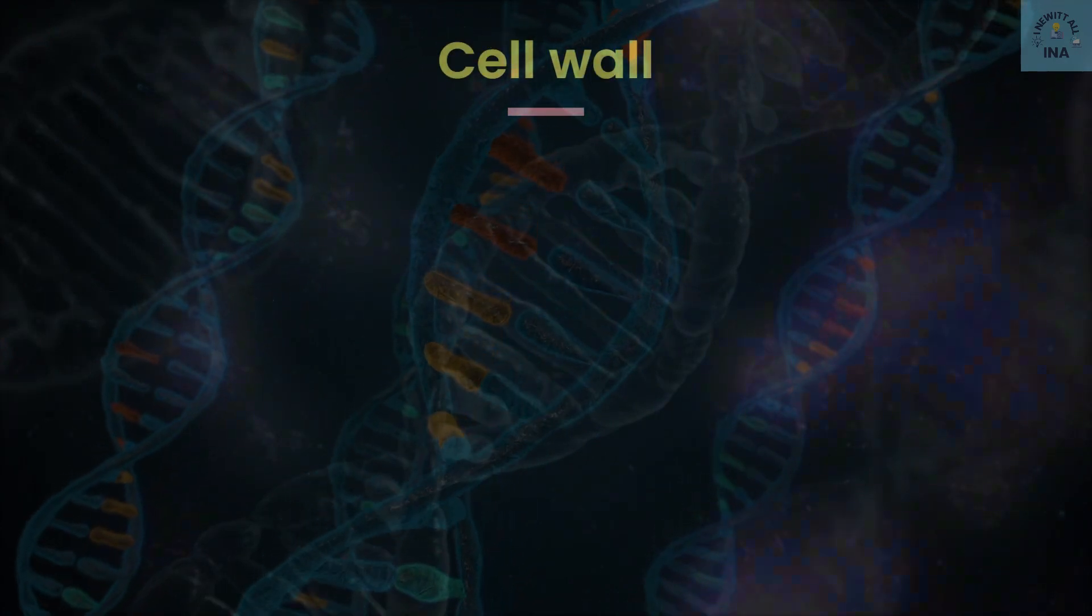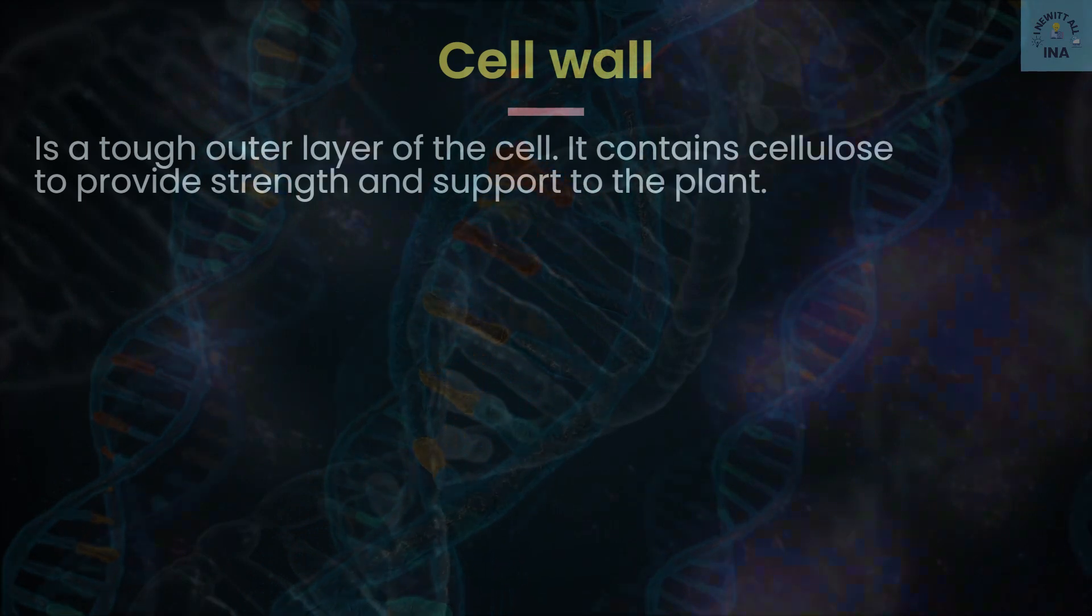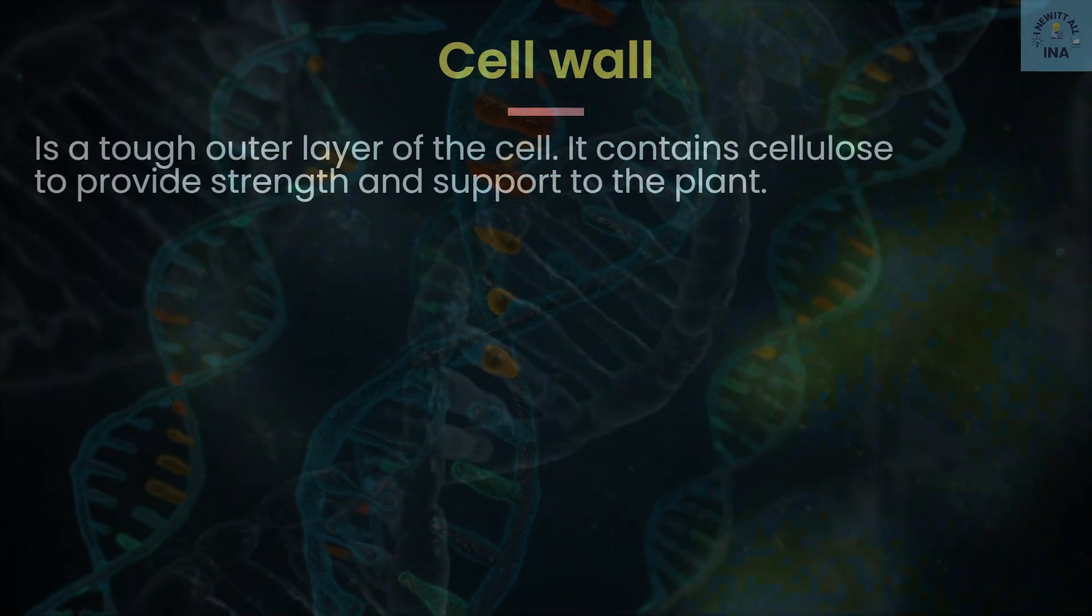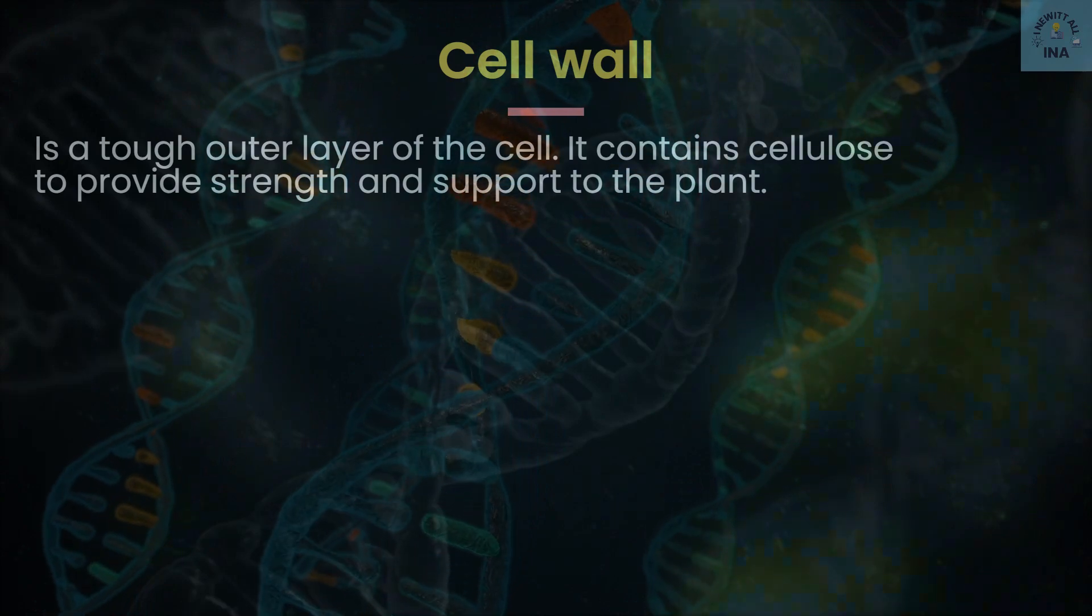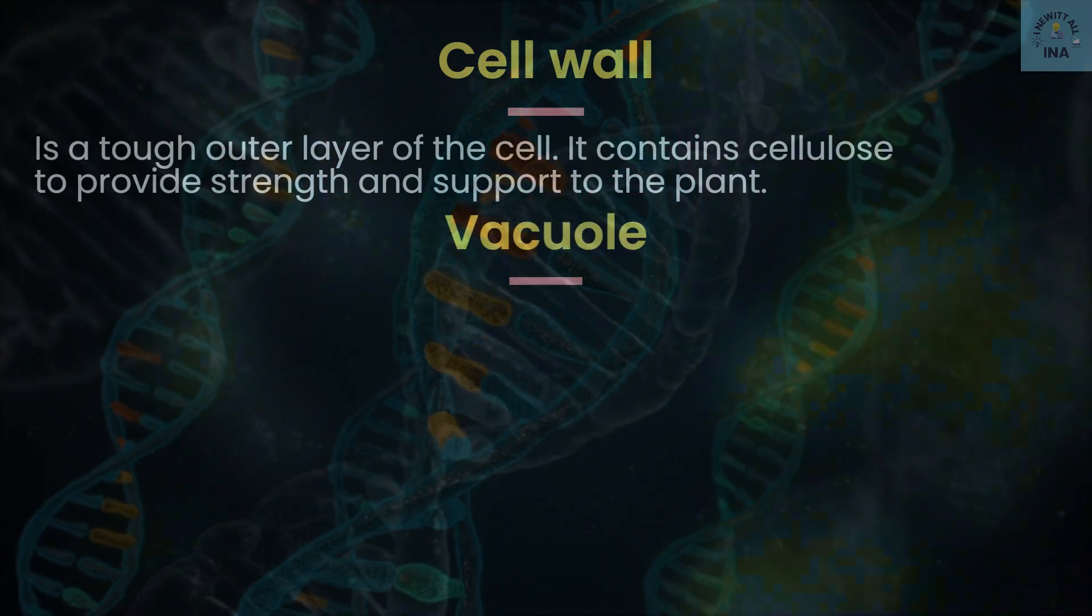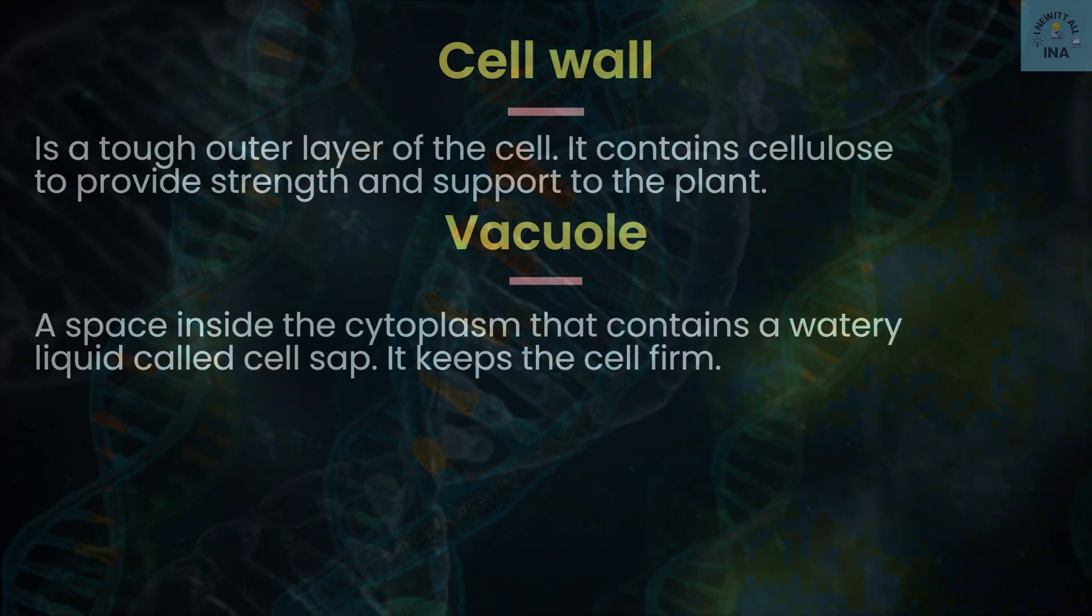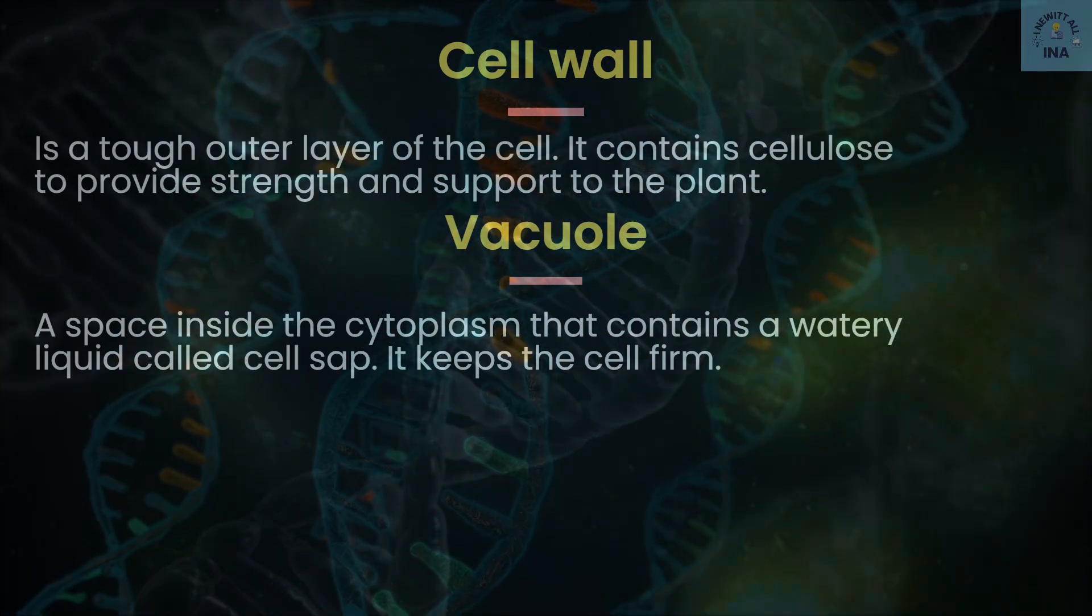Cell wall: a tough outer layer of the cell. It contains cellulose to provide strength and support to the plant. Vacuole: a space inside the cytoplasm that contains a watery liquid called cell sap. It keeps the cell firm.